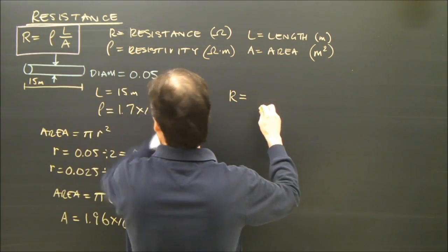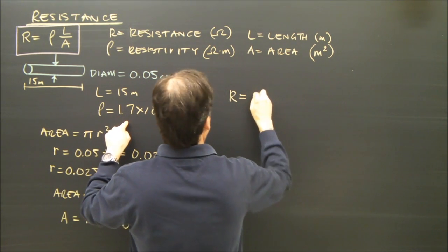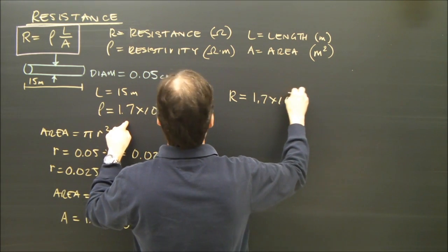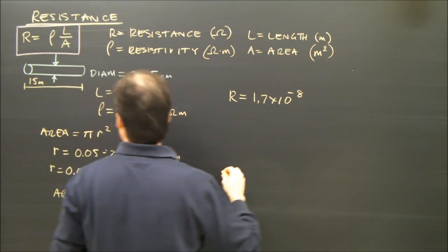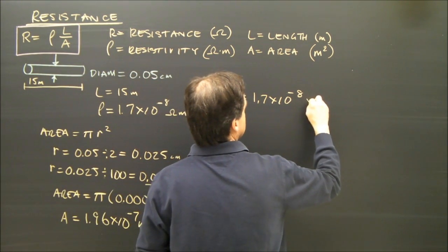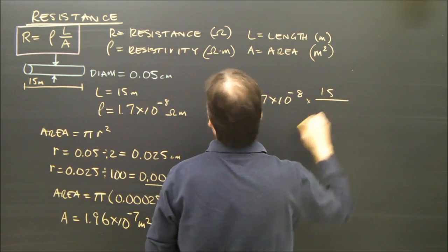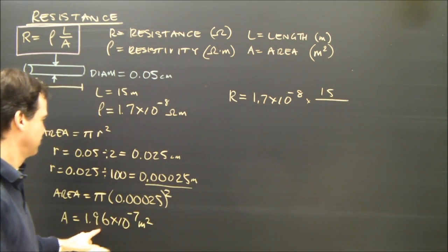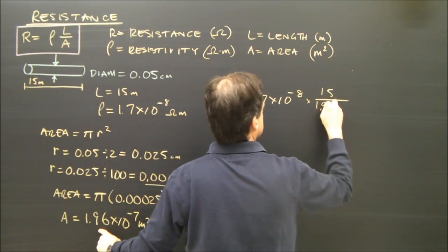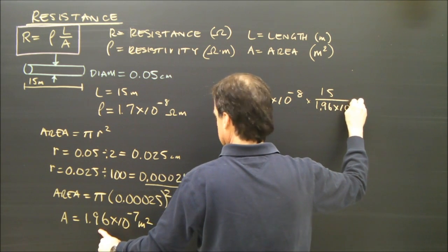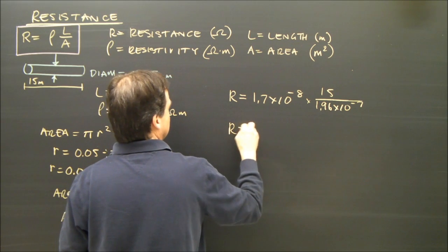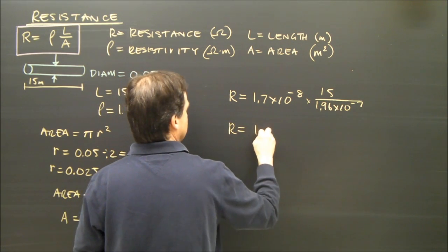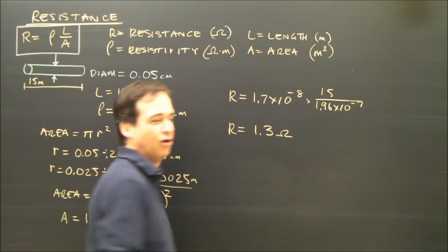It's rho, its resistivity, which is here, 1.7 times 10 to the minus 8 times the length, which is 15 meters, divided by the area, which is 1.96 times 10 to the negative 7. So the resistance of this piece of wire is 1.3 ohms.